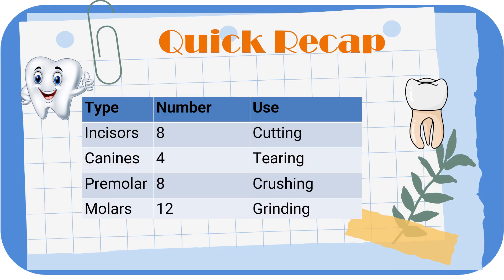Let's quickly remember: incisors are the ones which cut — they are eight in totality. Canines are the ones which tear — they are four in totality. Premolars are the ones which crush — they are eight in totality. Molars are the ones which grind — they are 12 in totality.